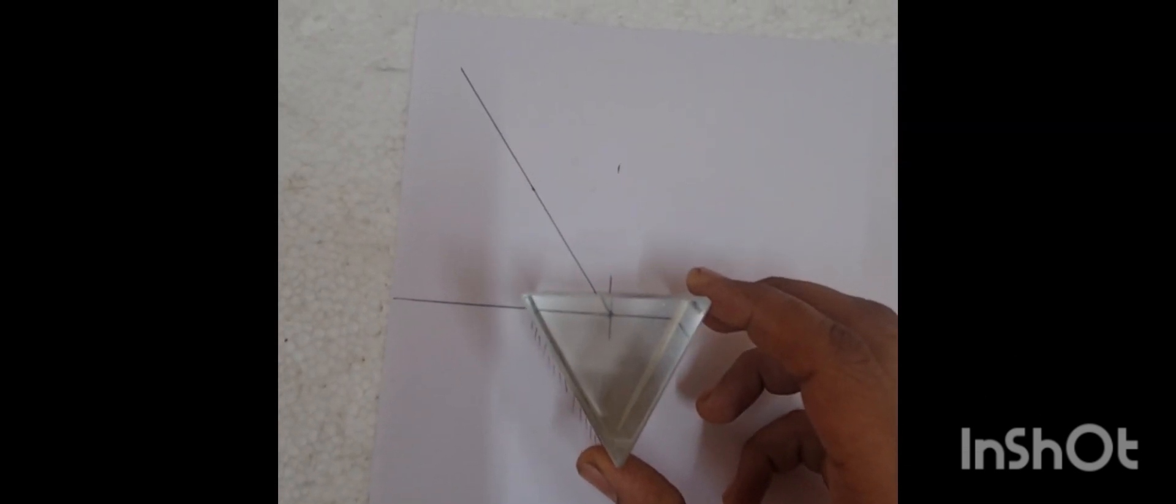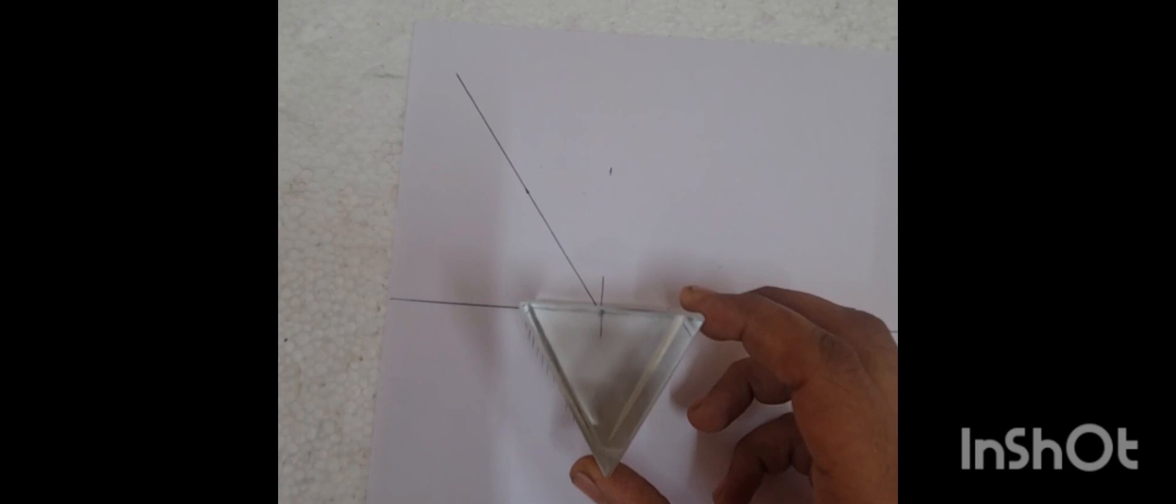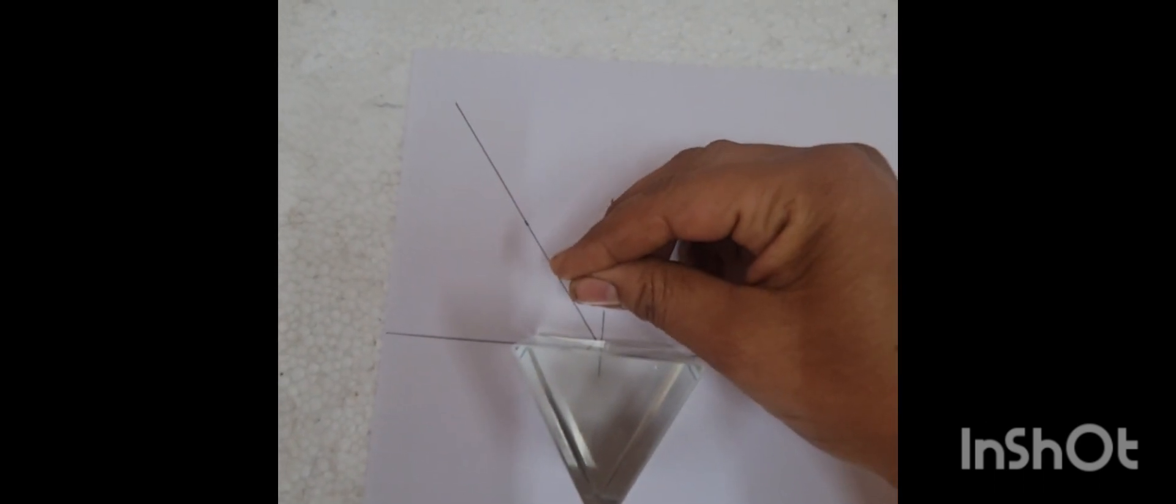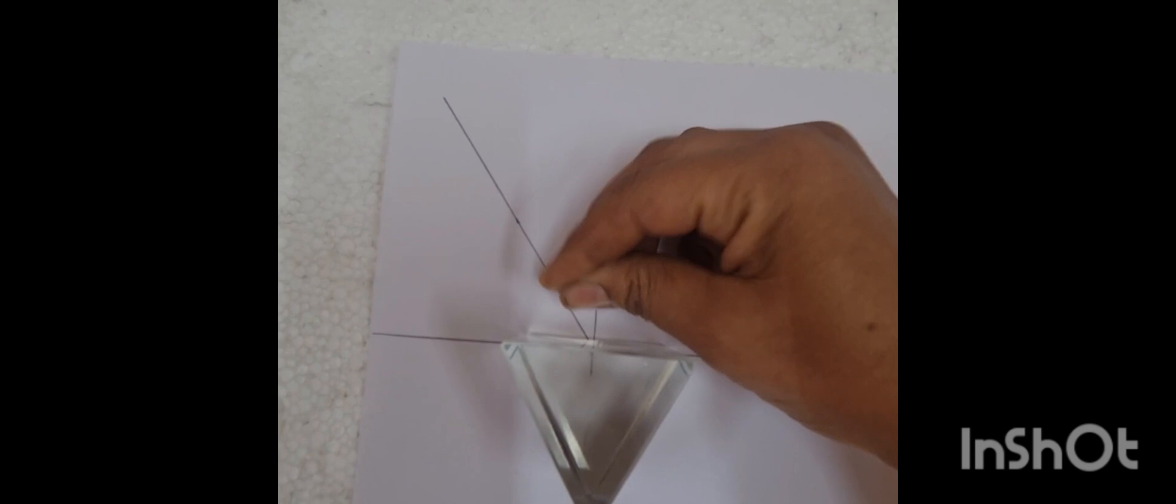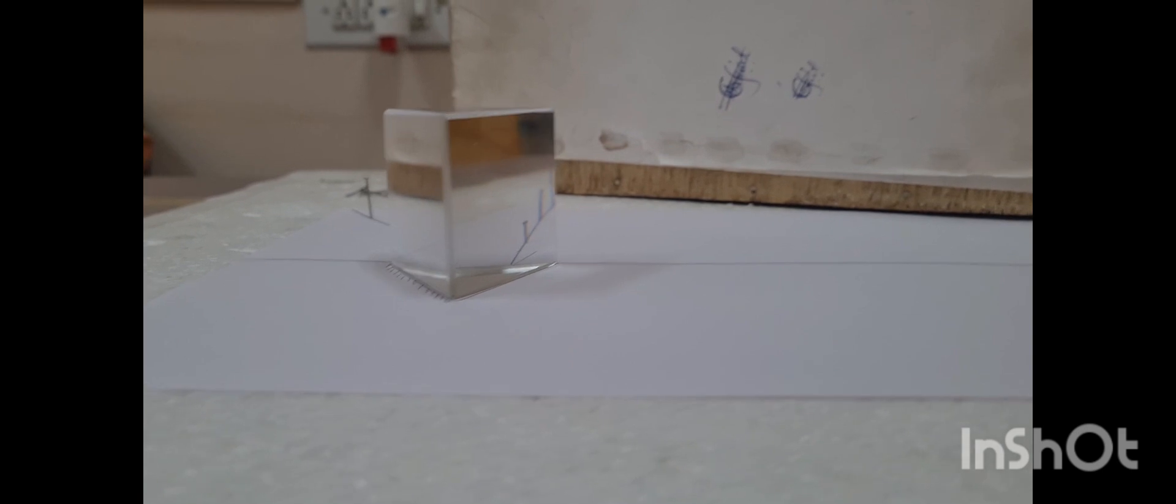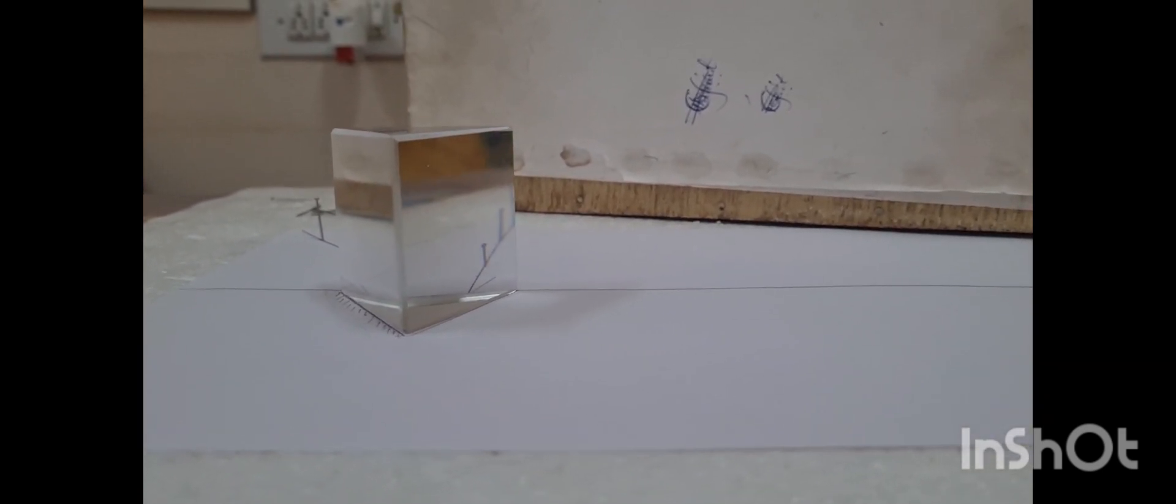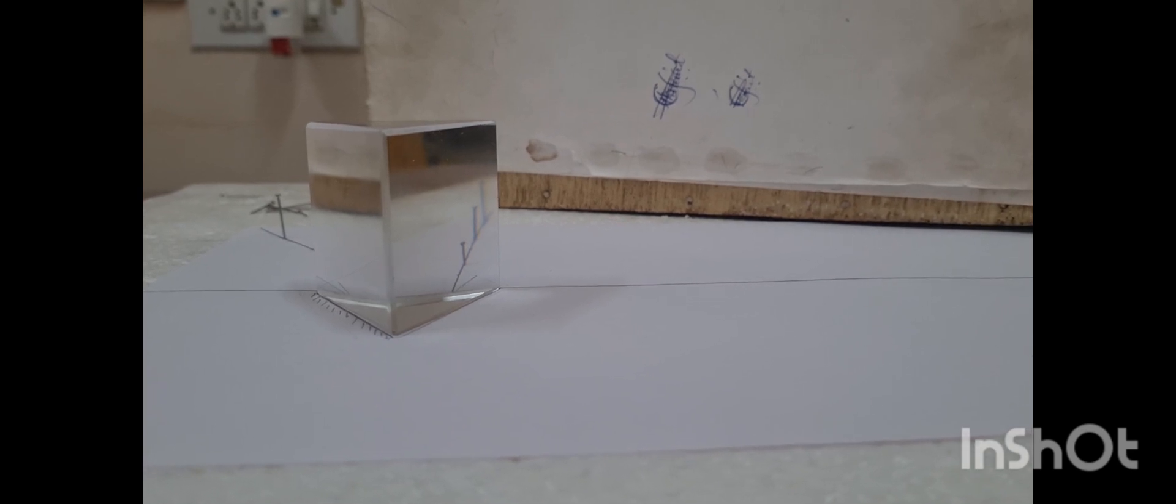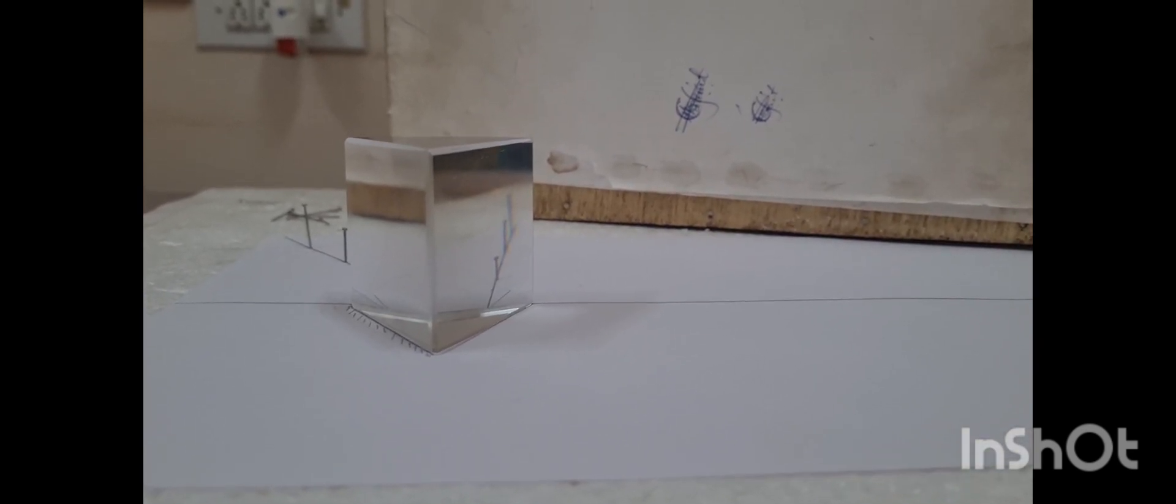Pick the pins on the incident rays at larger distances. You can see the refracted image of those three pins. Those are nothing but the emergent ray. That emergent ray has to be traced on the paper in the same direction.